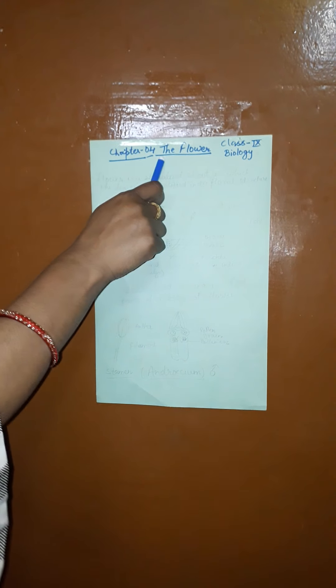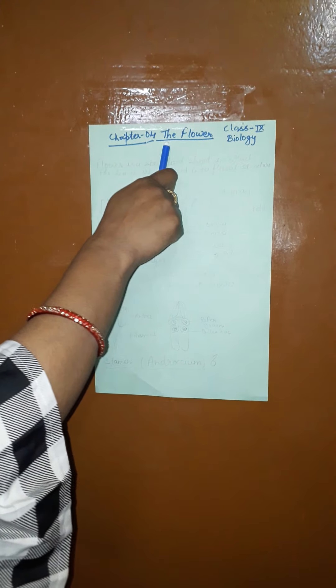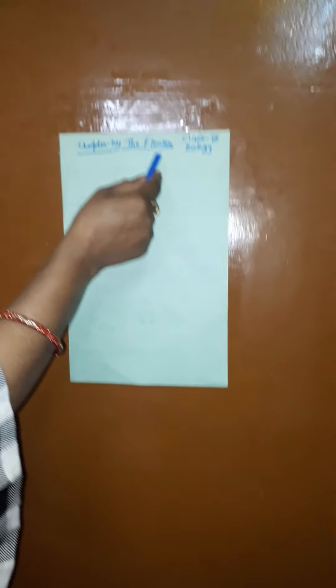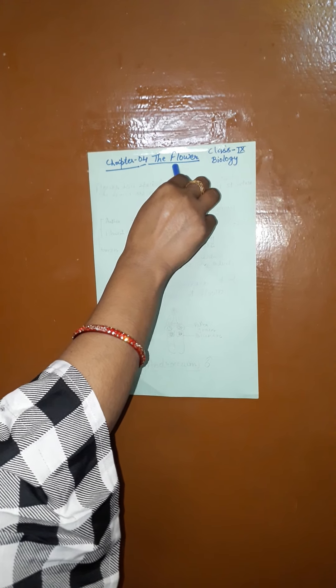Hello class 9th, today I am going to start a new chapter in your syllabus, that is chapter number 4 — the flower. Flower is a reproductive organ as well as a beautiful part of the plant. In biology, flower is a specialized shoot in which the leaves are modified into floral structure.